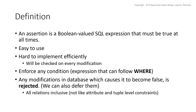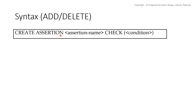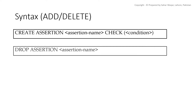Assertions are easy to create using normal queries, but they are hard to implement efficiently because the DBMS must check all queries to ensure they do not violate the assertion's truthfulness, adding time cost. The syntax is simple: type CREATE ASSERTION followed by the assertion name, and pass your query and condition into the CHECK function. To delete an assertion, type DROP ASSERTION followed by the assertion name.